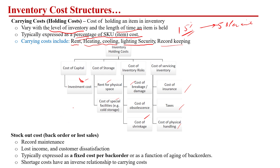Lastly, we have the shortage cost, also known as the stockout cost, back order cost, or lost sale cost. This occurs when a customer is dissatisfied due to unavailability of stock, resulting in a loss of that order. The shortage cost has an inverse relationship with the carrying cost — as the inventory level decreases, the holding cost decreases but the chances of shortage cost increase.